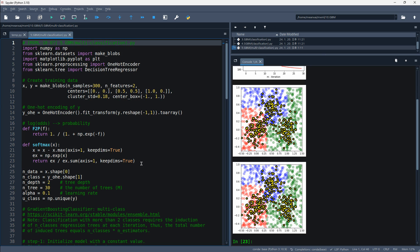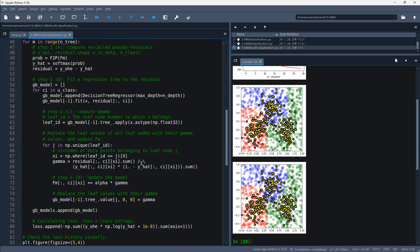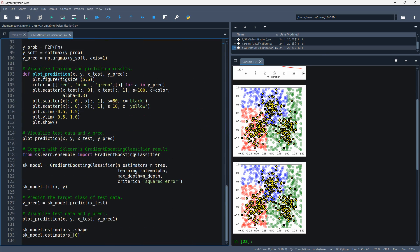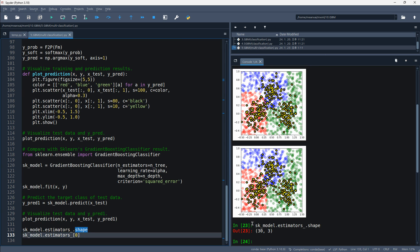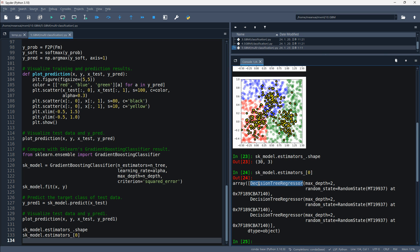Let's also check out the base model of this model. The shape of the model is 30 times 3, and the first base model consists of 3 decision tree regressors.